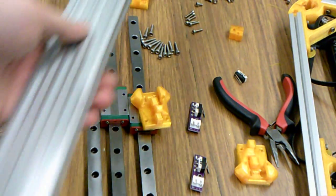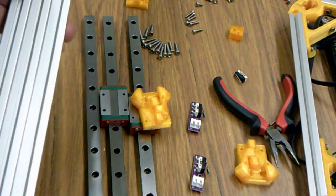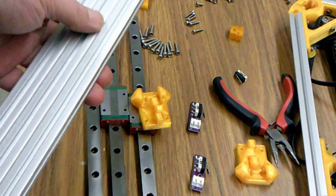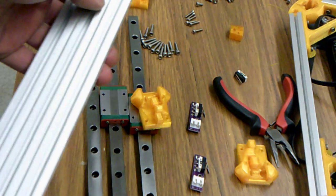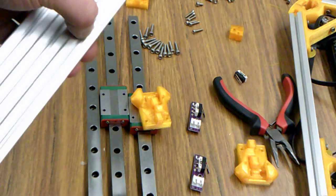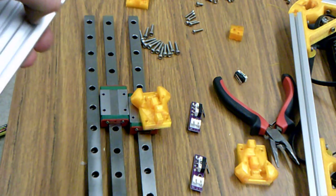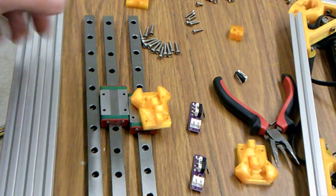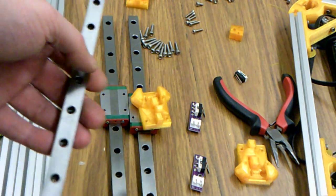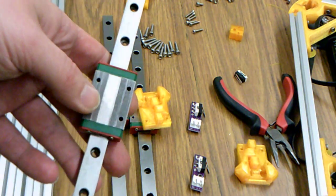What I have are our vertical rails. These are again Misumi 15mm V-Channel and the linear rails that I've decided to use for this are also Misumi.